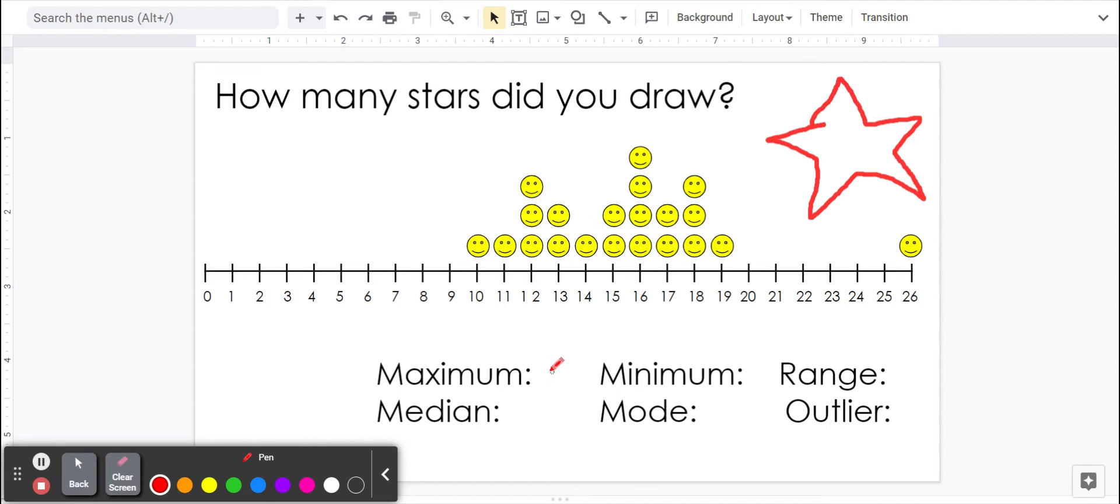The maximum number of stars somebody drew would be 26. Somebody drew 26 stars and that is the most out of these numbers. Out of these responses, which one is the minimum or the least? That would be this person who drew 10.